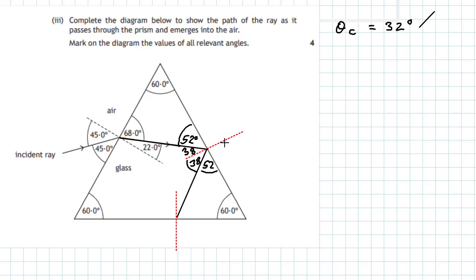Now we need to find the angle in the triangle at the bottom. All angles in that triangle must add up to 180 degrees. We've got 52 and 60 already — add them together and subtract from 180, and we're left with 68 degrees. You can see a pattern emerging: 60, 68, 52 and then 52, 60, 60 — they all add up to give 180 degrees.